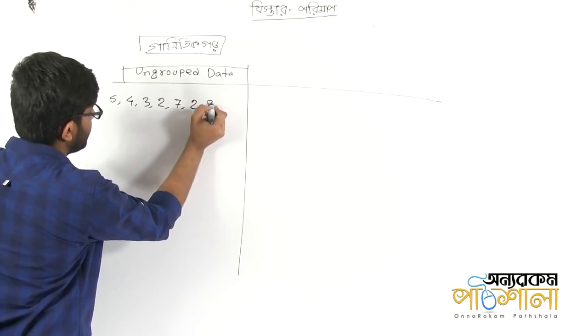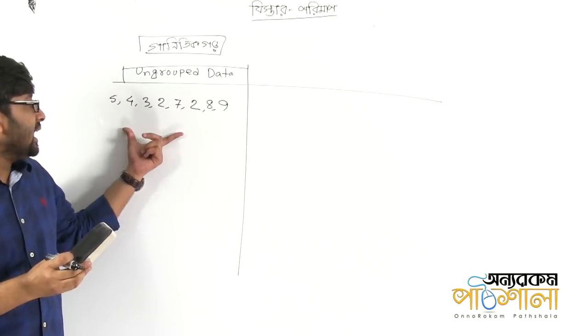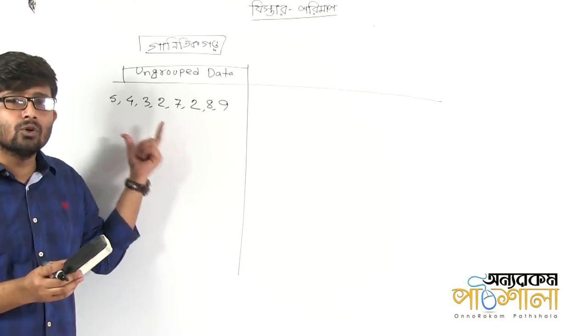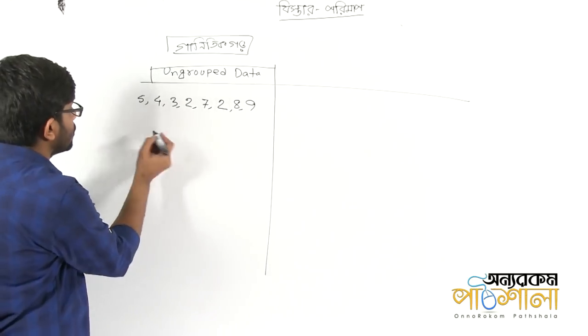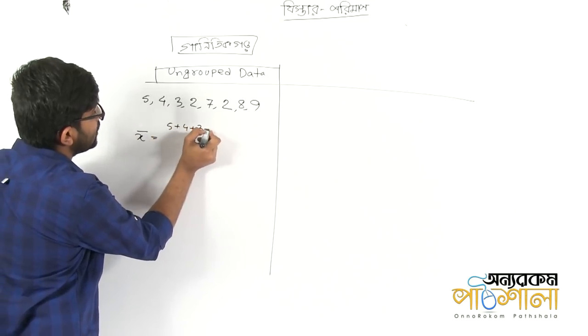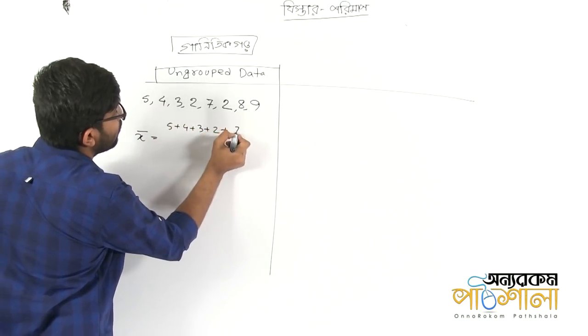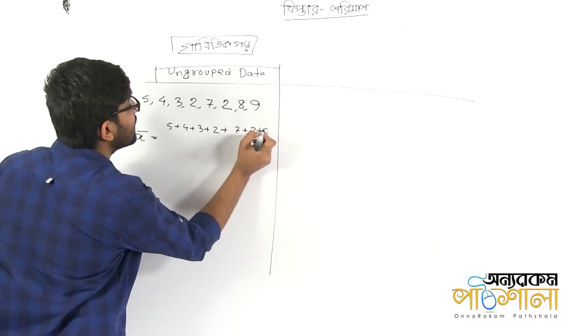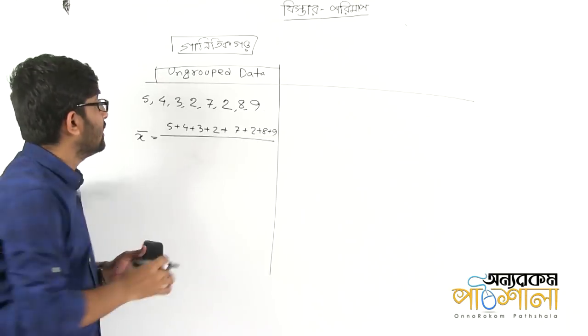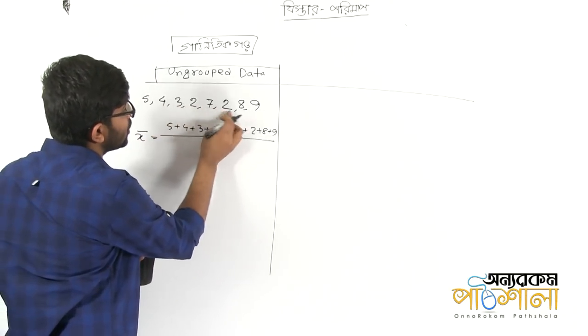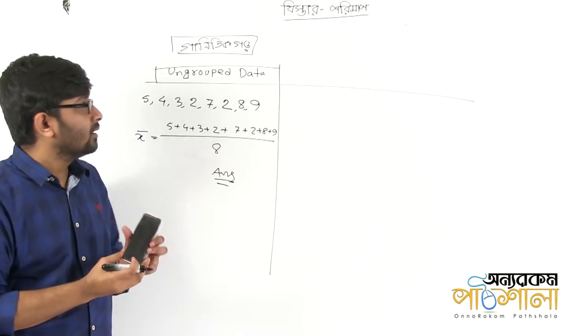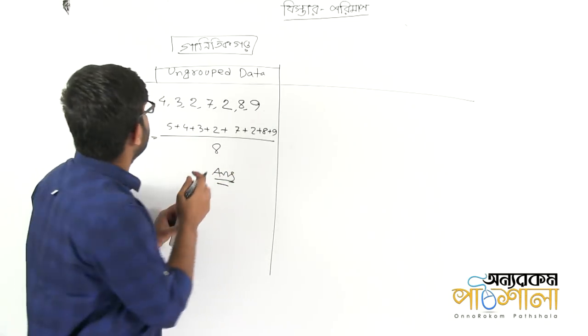7, 2, 8, 9. So when you say that the marks are 5, 4, 3, 2, 4, 7, 2, 8, 9. When you say that the marks are 5, 4, 3, 2, 8, 9. When you say that this ungroup data,